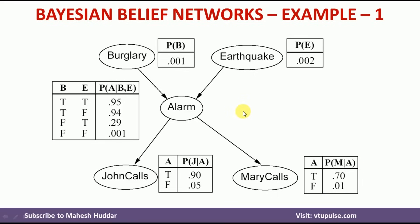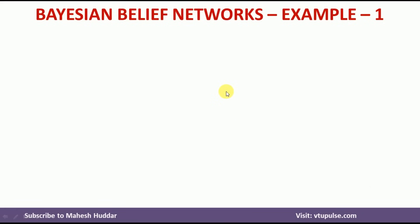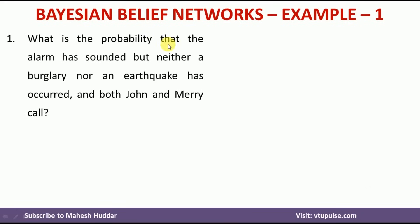Given these events and probabilities, we need to answer a few questions. The first question is: what is the probability that the alarm has sounded, but neither burglary nor earthquake has occurred, and both John and Mary have called? In this case, we have been given all the events — burglary, earthquake, alarm, John, and Mary — so we need to calculate the joint probability distribution.